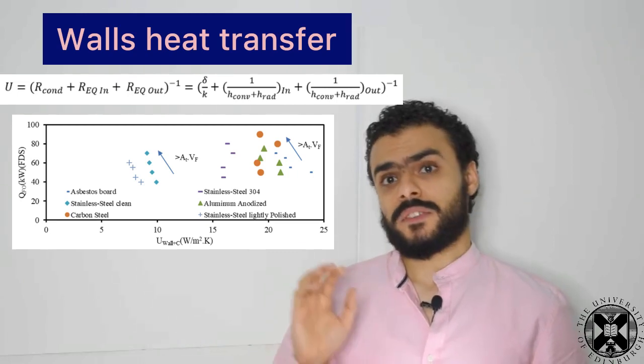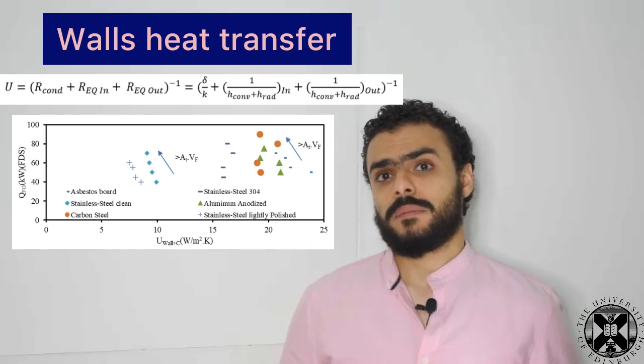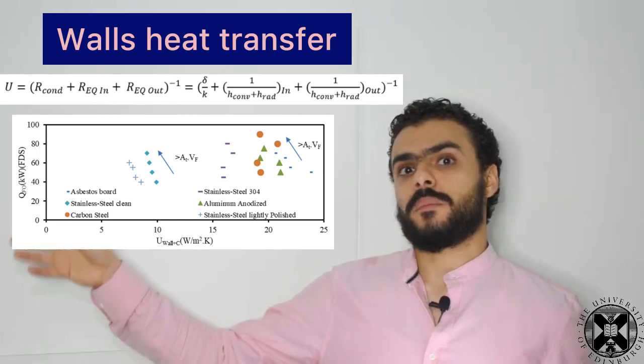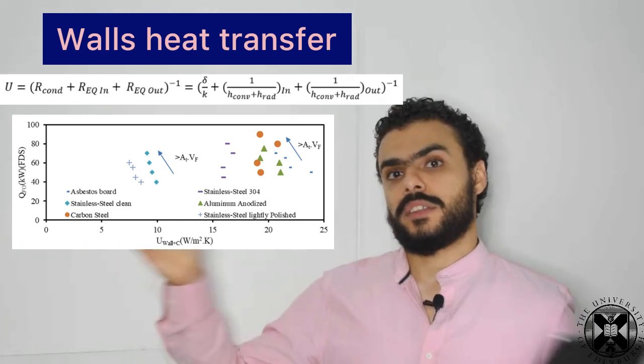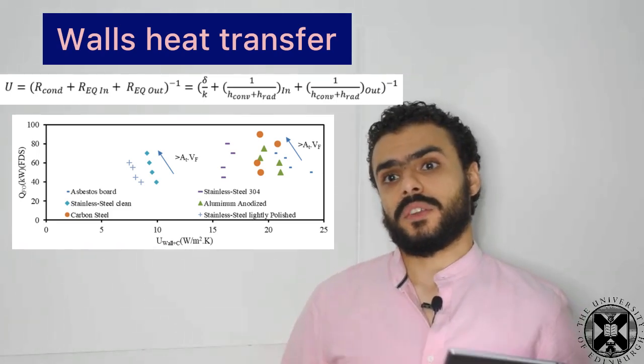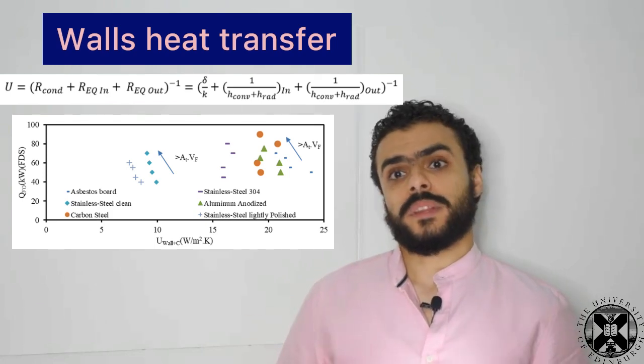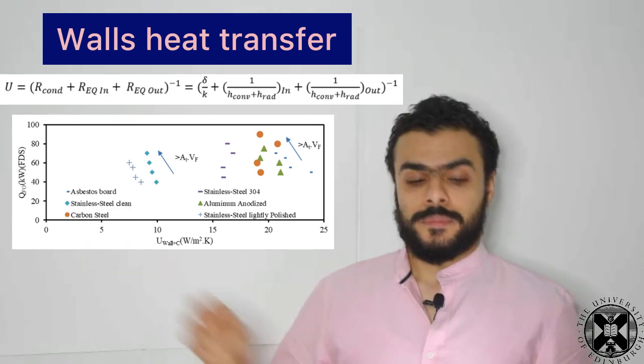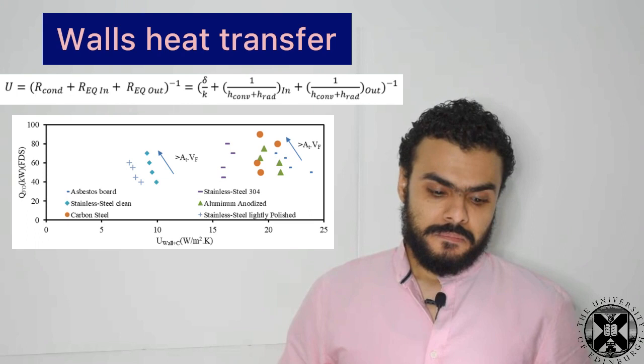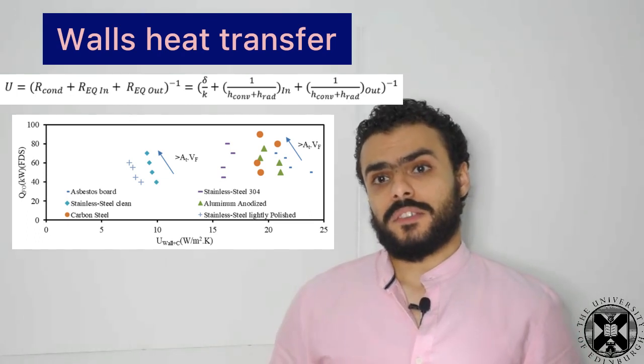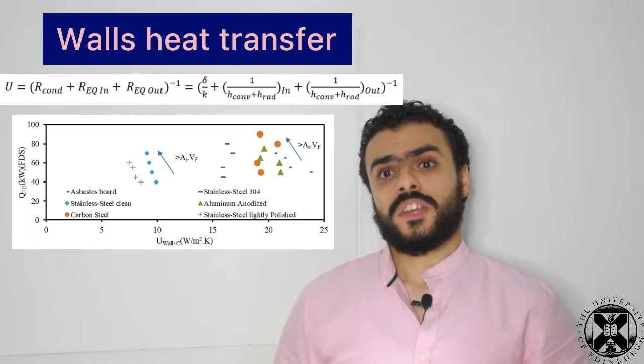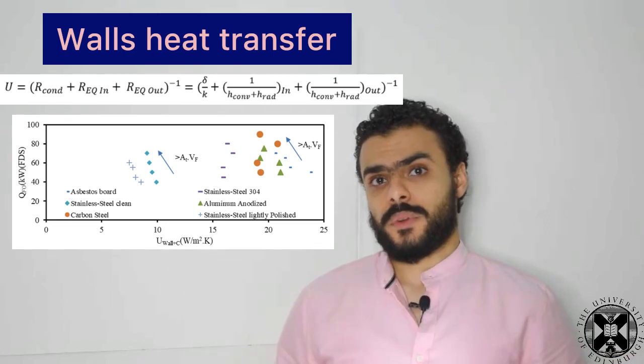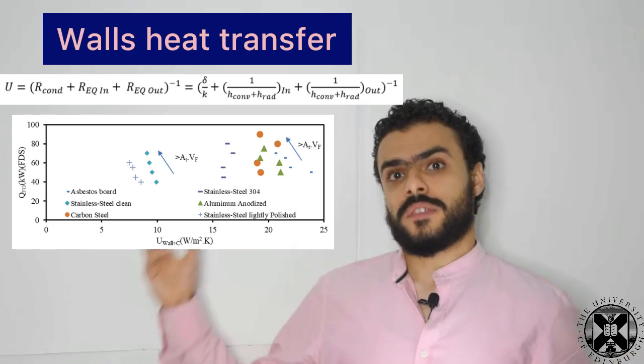As you can see, there is a strong relationship, but at the same time we can't rely on such a complex parameter like the total heat transfer coefficient, which needs a lot of outputs from the experimental and numerical work to be computed. That's not fitting the idea of the empirical equation because we want to use the empirical equation to design a fire before even doing experiments. So we tried to simplify it a little bit.